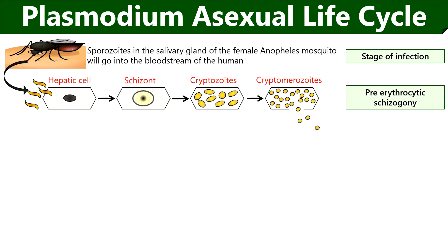Then comes the pre-erythrocytic schizogony, or the infection phase of the liver cell. During this stage, the sporozoites first infect the liver cells or hepatic cells by invading the essential components. Later, sporozoites convert into schizont and attain a large size. Then a schizont divides to increase its number and form cryptozoites. Cryptozoites transform into cryptomerozoites after successive divisions. Ultimately, the liver cells laden with numerous cryptomerozoites will burst out and the cryptomerozoites are released from the liver cells.